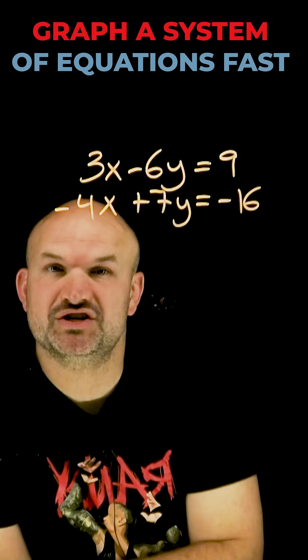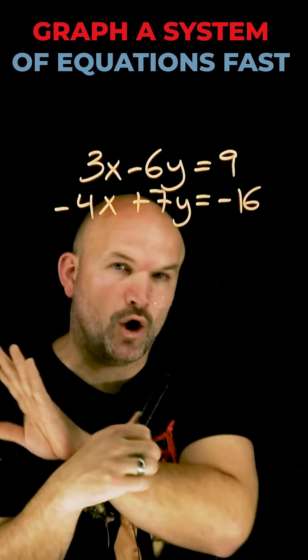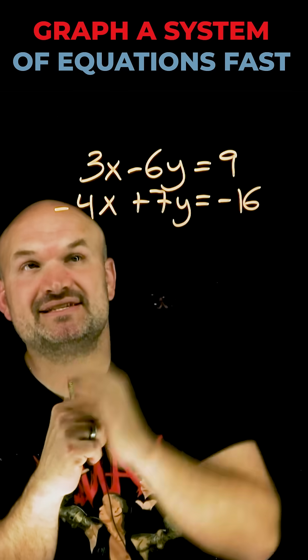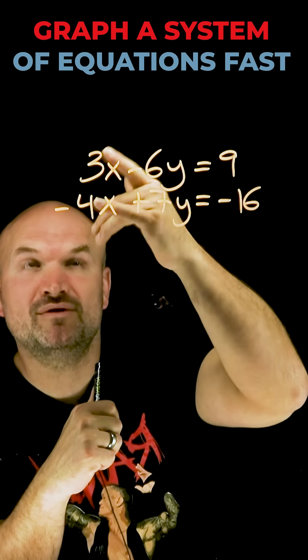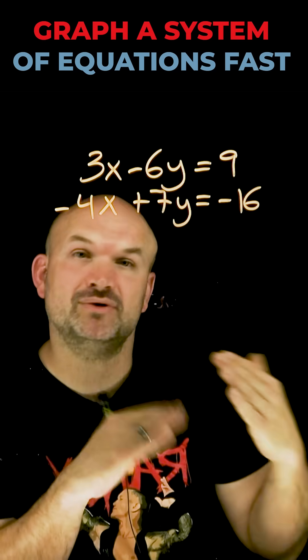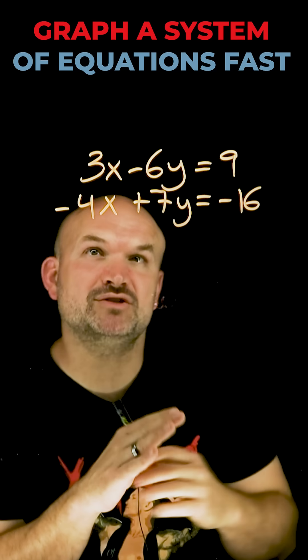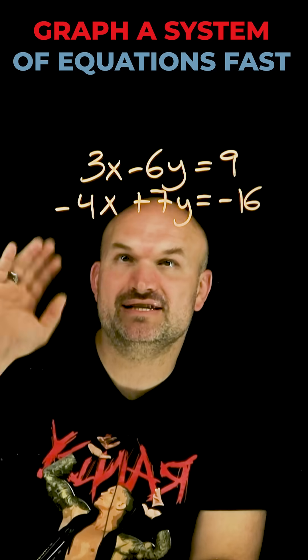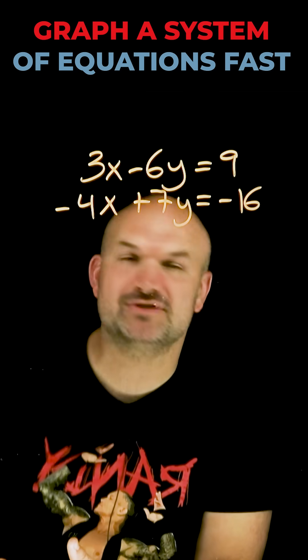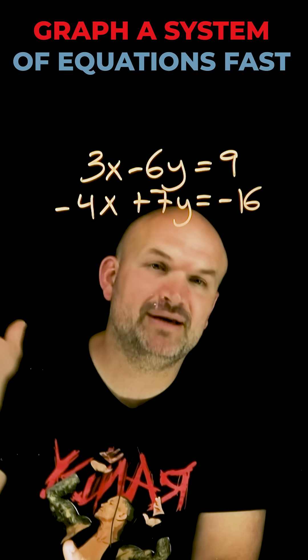Let me show you how to solve this system of equations fast. To be fair, the only reason I'm showing you this is because I have a system of linear equations where the coefficients of x and y are not the same, no variable is isolated, and I can't just multiply one equation by a scalar to get the same coefficient. If I had that, I would simply use substitution or elimination to do this quickly.